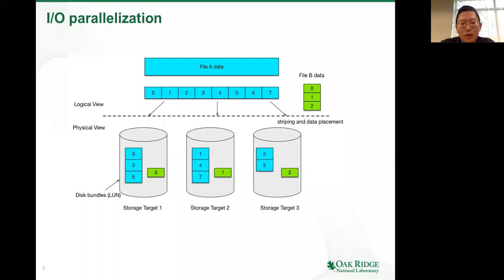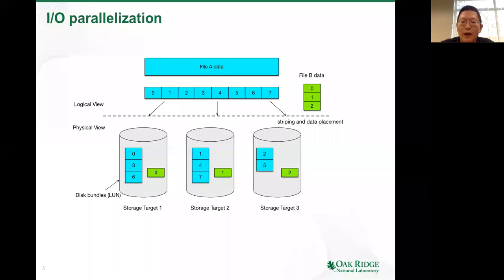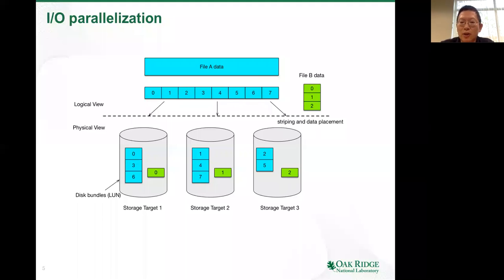Although the storage target is drawn here as a single disk, in practice multiple disks are bundled together using RAID technology to store extra parity information, improving both performance and reliability. Different PFS systems have different ways of deciding what they call the stripe size — the size of each data chunk — and the stripe width — how wide you spread the data. Some PFS try to automate everything to simplify, while some provide more control points.